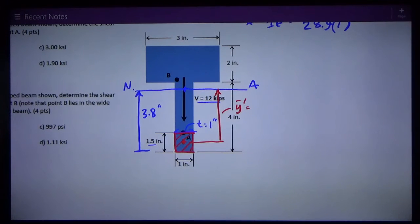And that's equal to, we have to do a little calculation here. It's 3.8 inches from the bottom of the section to the neutral axis. And then half the height of that little rectangle A prime is 0.75 inches. That's the distance from the bottom to the centroid of A prime. So Y bar prime is 3.8 minus 0.75.